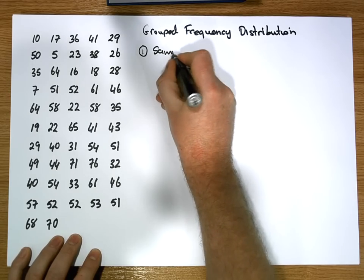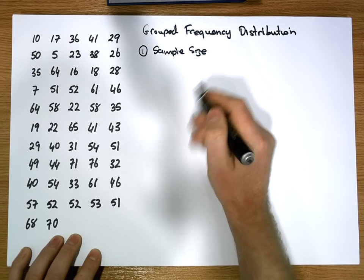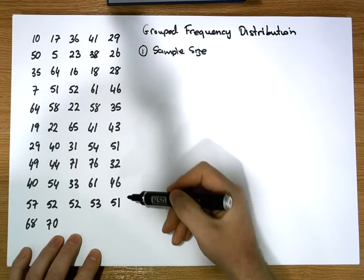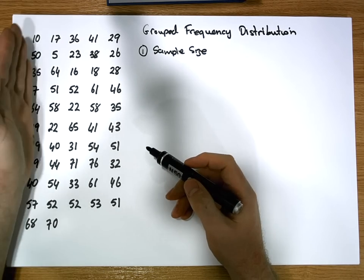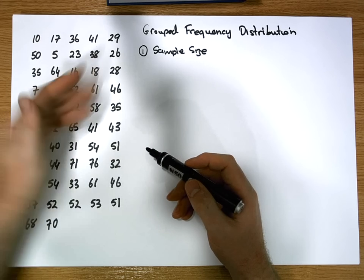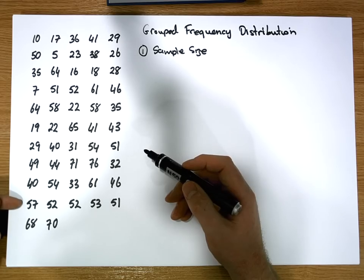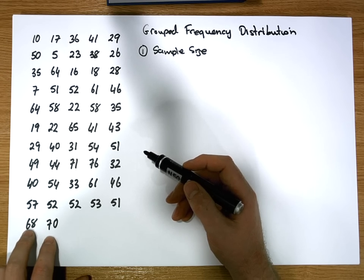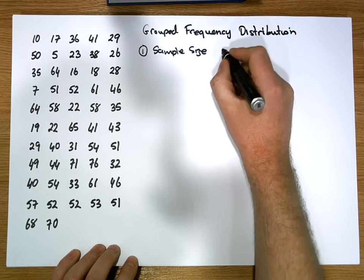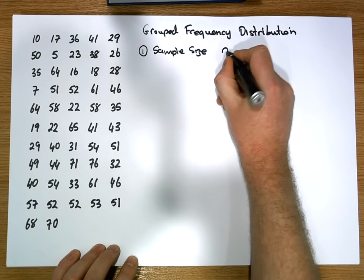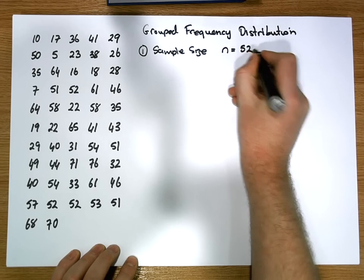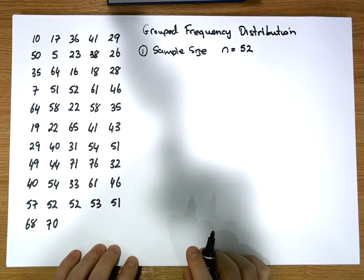Step one: we're going to calculate the sample size of the data, that's how many observations we have in the data set. We have five columns of data and ten full rows, so 50 values, plus two extra values, giving us a sample size of 52 observations. So small n is equal to 52.